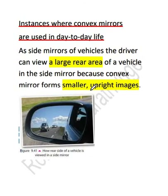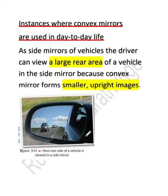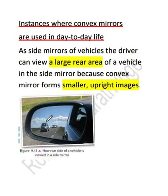Where do you utilize these convex mirrors? Convex mirrors are utilized specially in vehicles as side mirrors. Why? Because the image's size is smaller than the object, so a large rear area can be seen as a small image through this mirror. That's the reason they utilize it as a side mirror — the driver can view a large rear area of vehicles in the side mirrors in a smaller and upright version. They can observe the huge area as small upright images.